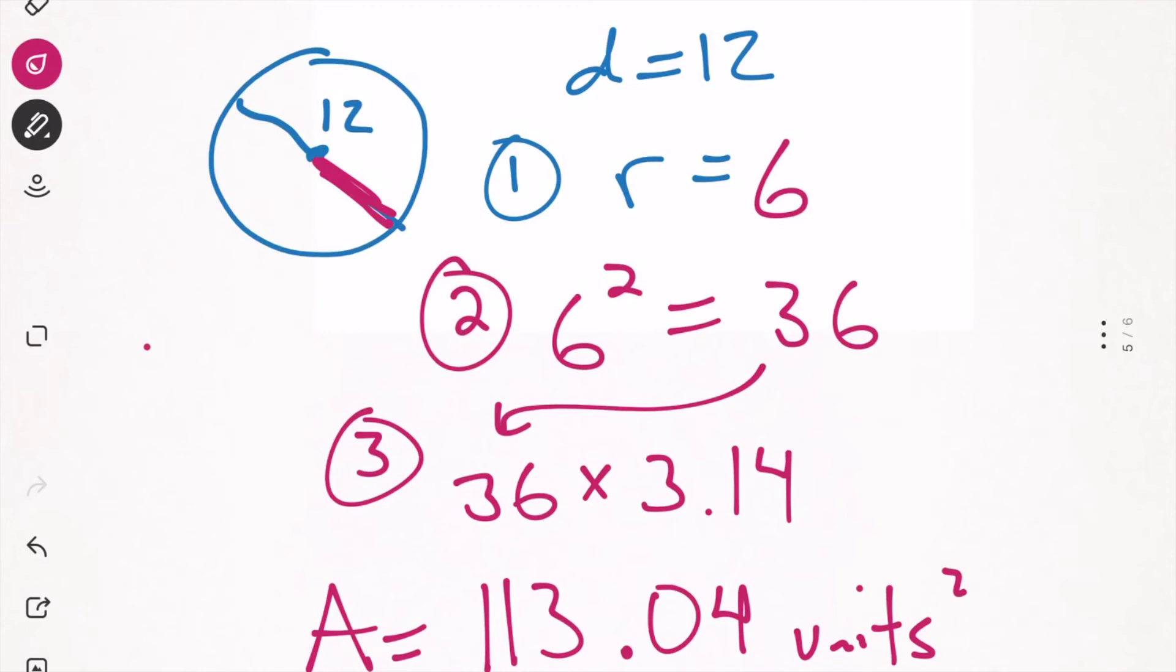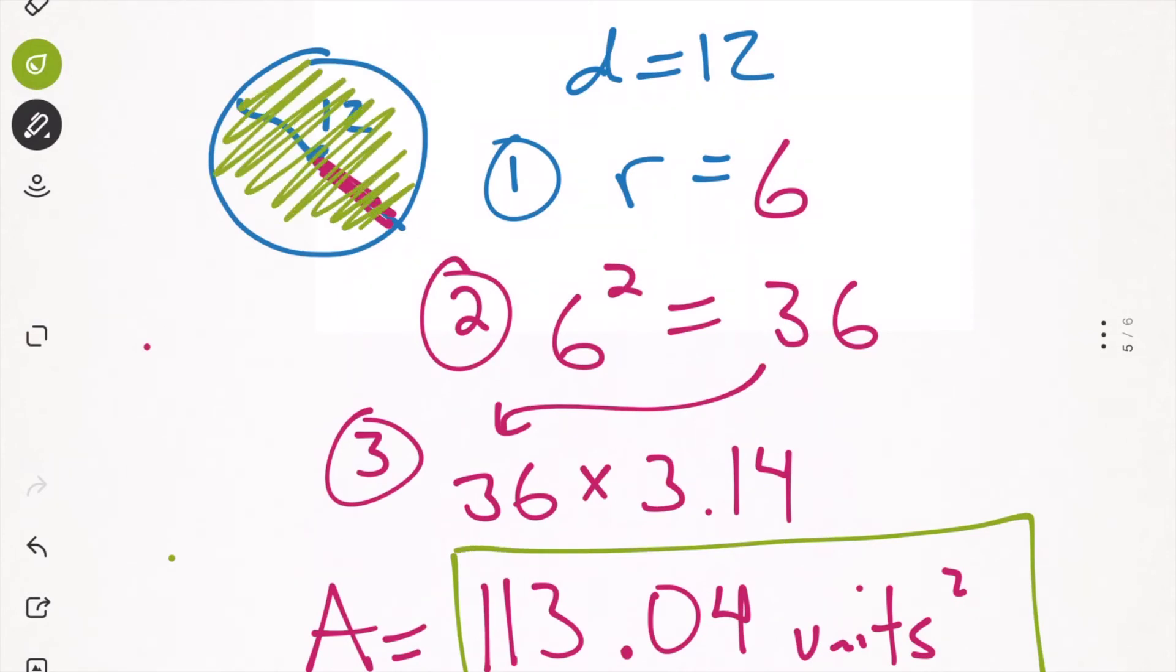And once again, in case it wasn't clear before, this answer, 113.04 units squared, that's how much space there is inside the circle. Unlike circumference, which is the distance around a circle, this is the space inside the circle.